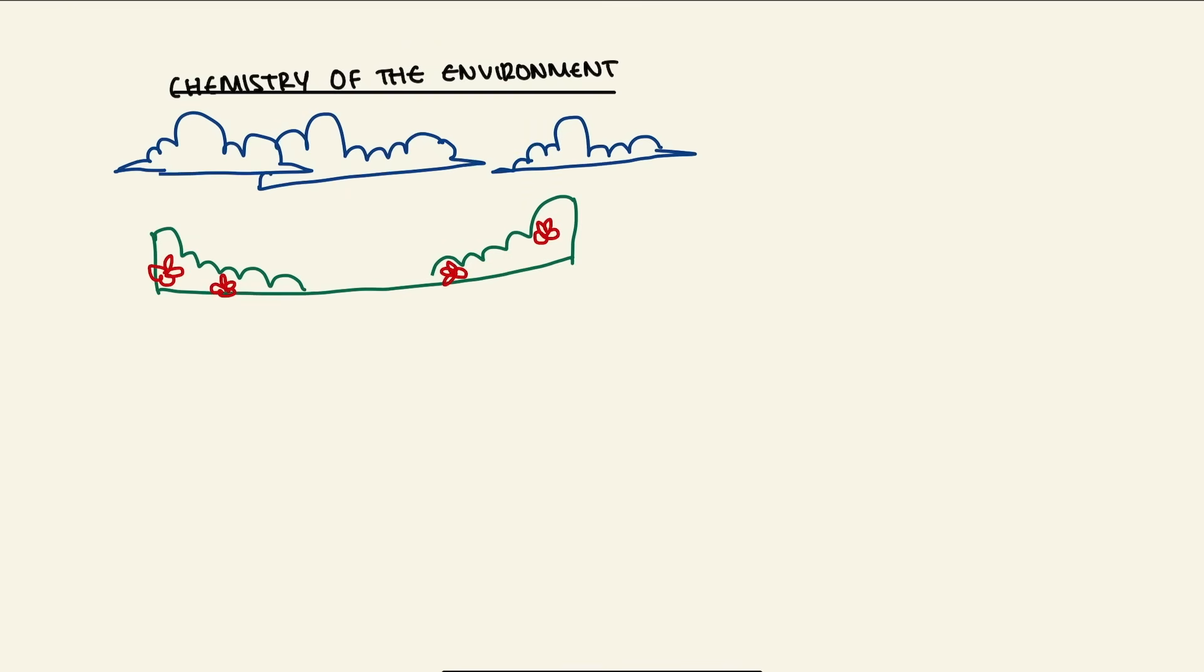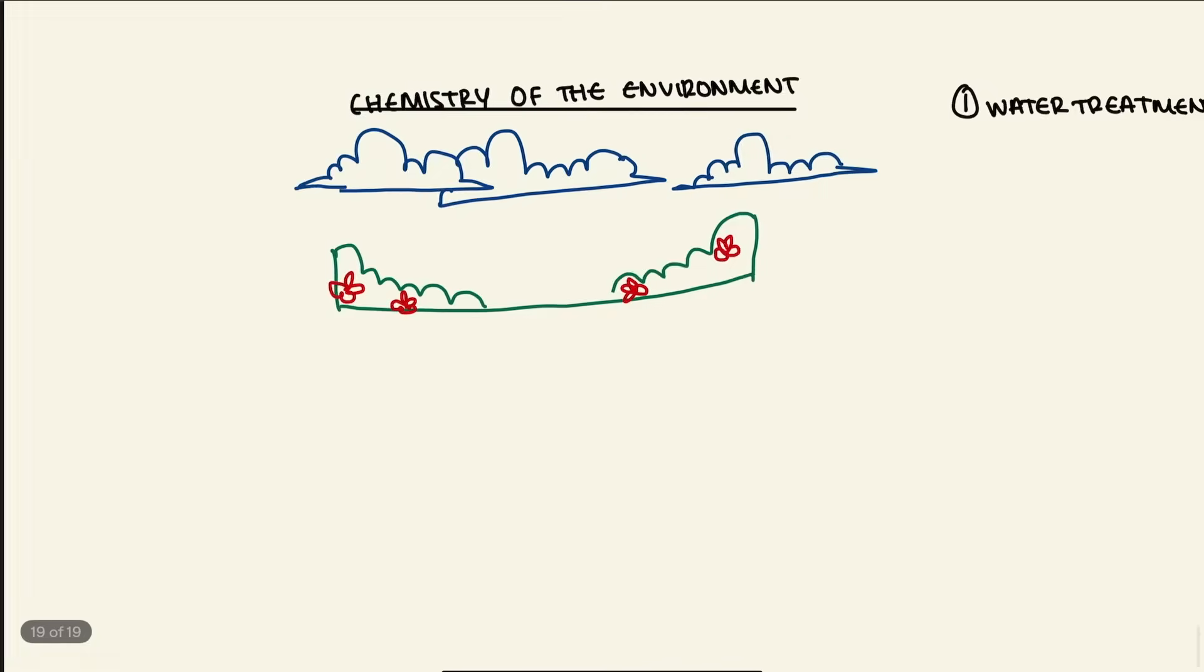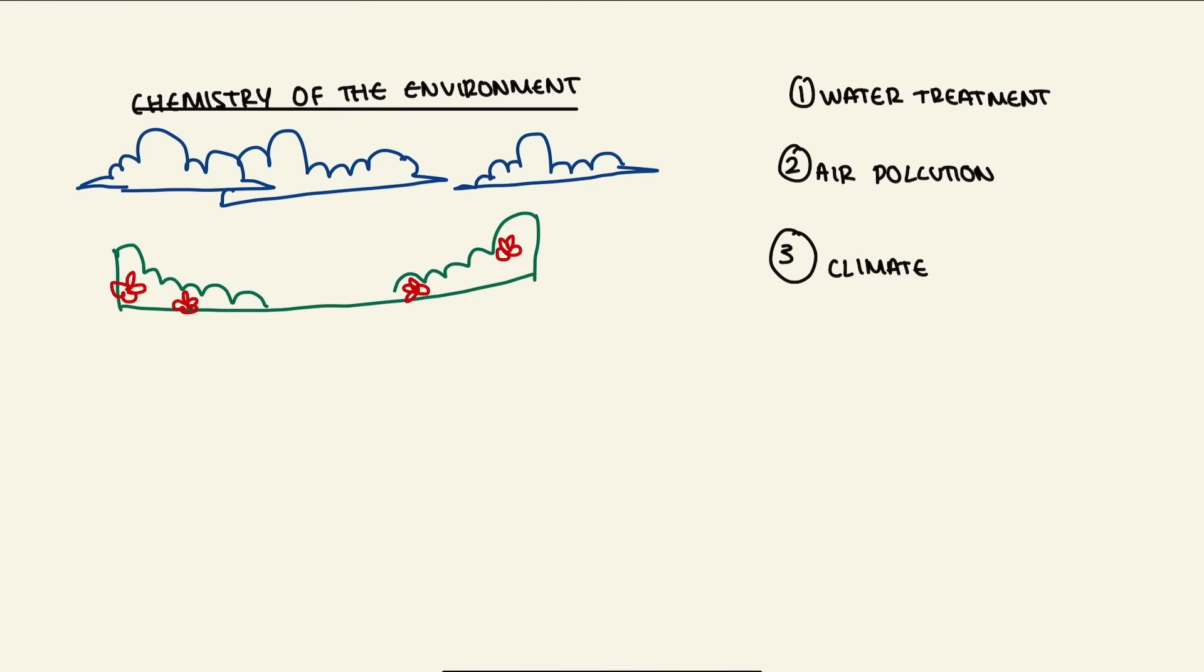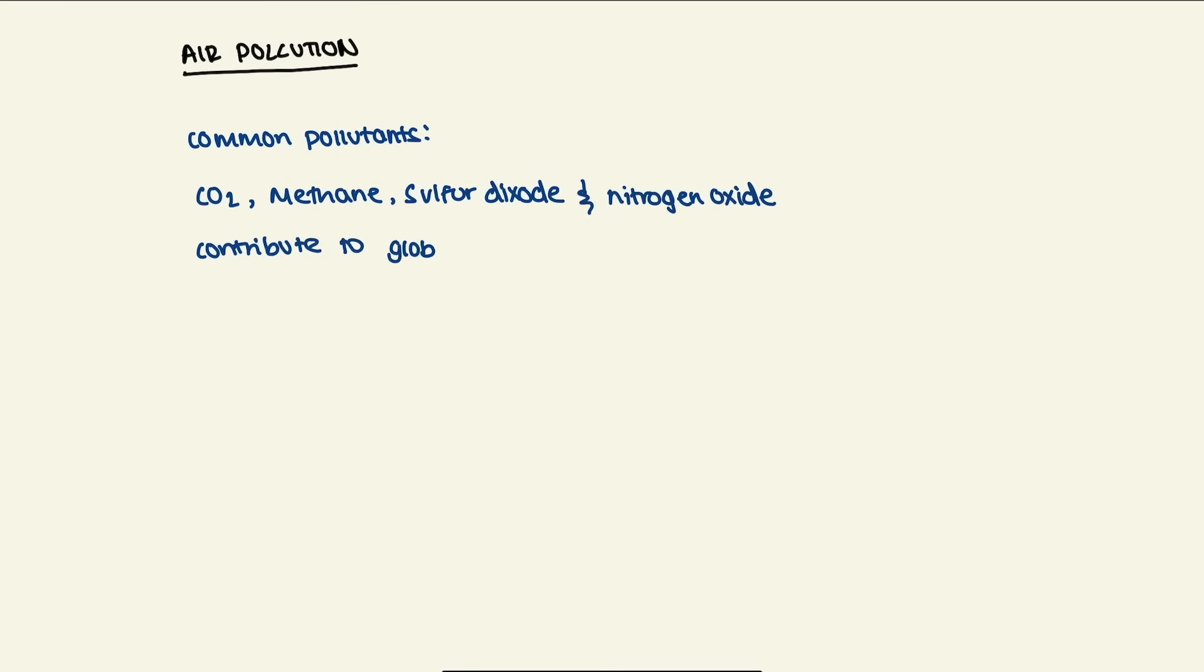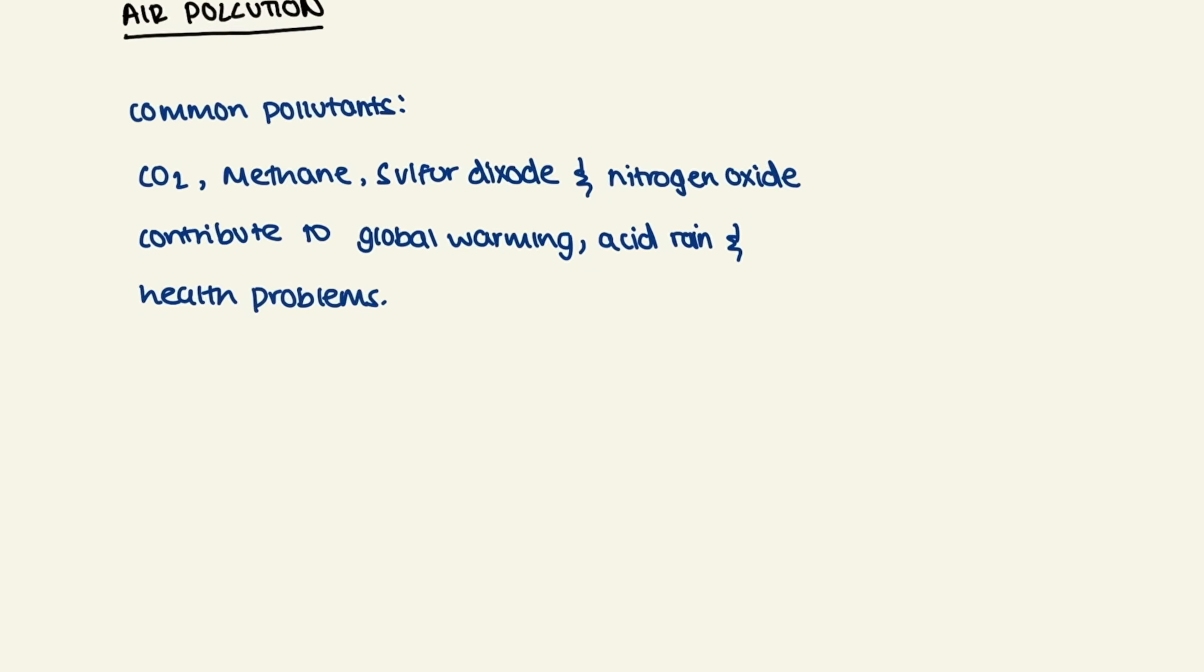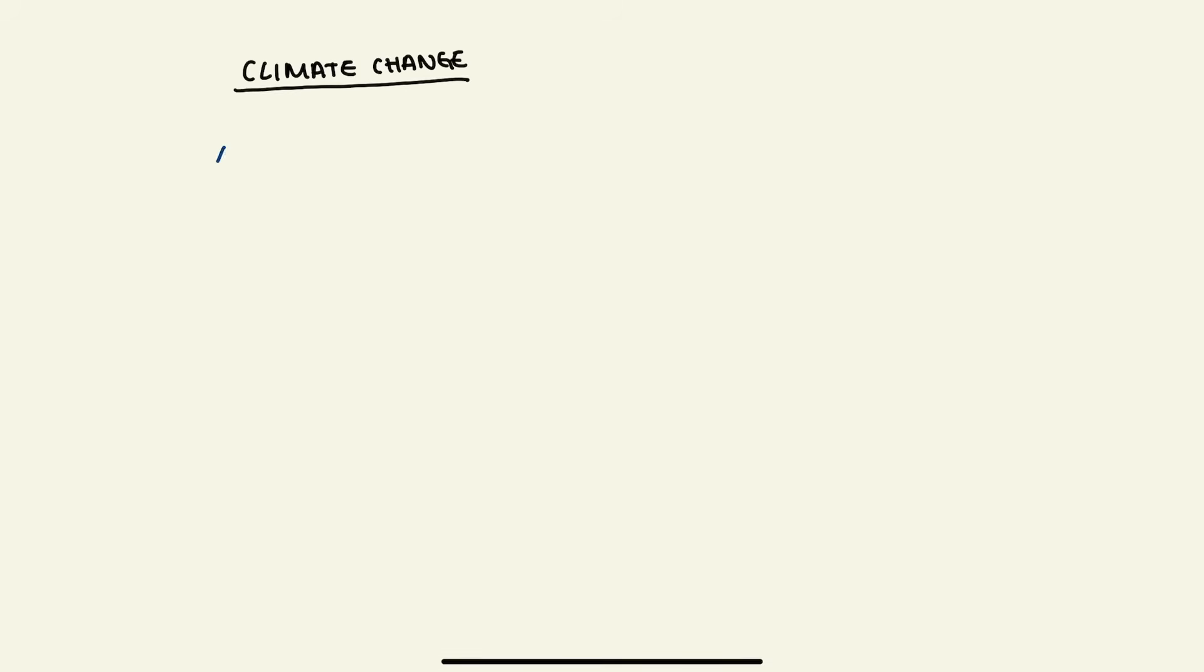When talking about chemistry of the environment, we talk about water treatment, air pollution, and climate change. With water treatment, water is filtered and treated with chlorine to remove impurities and kill bacteria. With air pollution, common pollutants like CO2, methane, sulfur dioxide, and nitrogen oxide contribute to global warming, acid rain, and health problems. When talking about climate change, we talk about greenhouse gases that trap heat, leading to global warming.